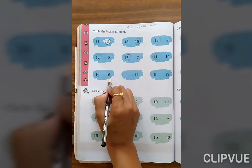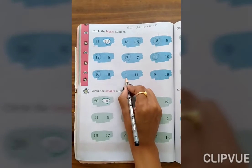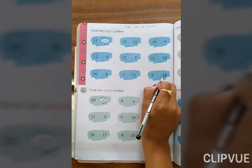16, 6. Which one is bigger? 16. 1, 11. 11 is bigger. 9, 19. Then 19.